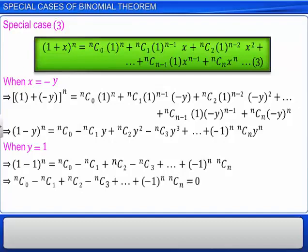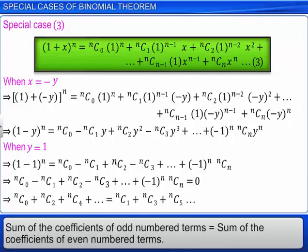nC0 minus nC1 plus nC2 minus nC3 and so on equals zero. By transposing all negative terms to the other side of the equation, we get nC0 plus nC2 plus nC4 and so on is equal to nC1 plus nC3 plus nC5 and so on. This implies that the sum of the coefficients of the odd-numbered terms of the expansion is equal to the sum of the coefficients of its even-numbered terms.